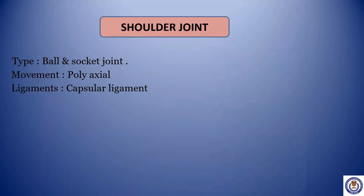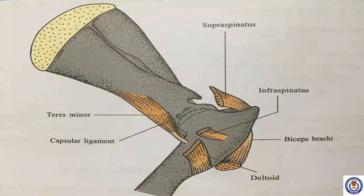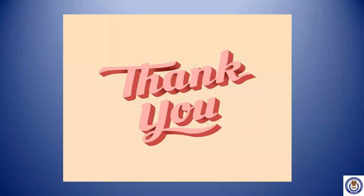Shoulder joint. Type: ball and socket joint. Movement: polyaxial. Ligaments: capsular ligament. Thank you for watching. Please do like, share and subscribe to Pashuwaani.